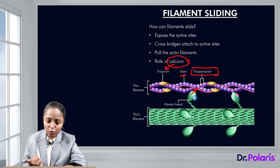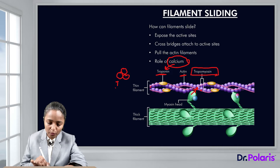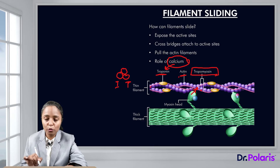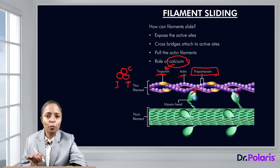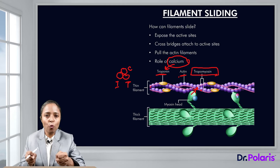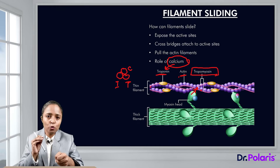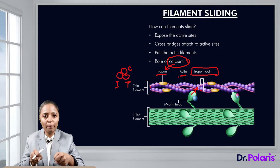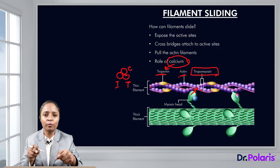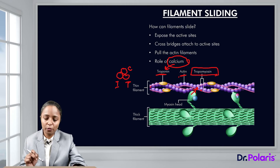Troponin has three sites: the I site, which binds with the actin filament; the T site, which binds with tropomyosin; and the C site, which binds with calcium. With the I and T sites, troponin holds tropomyosin over the actin. When calcium binds to the C site, the other two sites move, pulling the tropomyosin molecule away from the actin filament, thus exposing the active sites of actin.